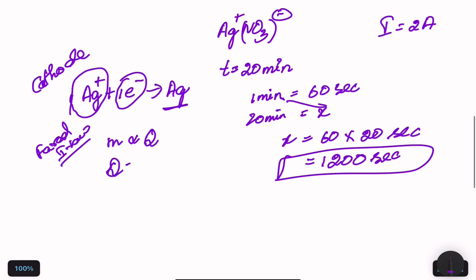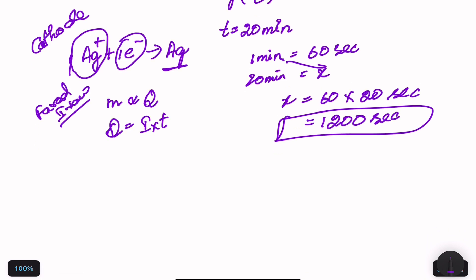Q equals i into t, where i is current in ampere and t is time in seconds. Adding the proportionality constant, m is equal to z × i × t, where z is the electrochemical equivalent.